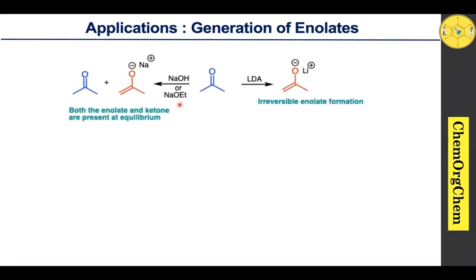Next we move on to the generation of enolates by LDA — one of the most important applications. When acetone is treated with common bases like sodium hydroxide or sodium ethoxide, they only partially generate the corresponding enolate ion. This enolate is present at equilibrium with acetone, which may lead to side products since the enolate acts as a nucleophile and acetone acts as an electrophile. When the same ketone is treated with LDA, it is completely converted into the enolate form — meaning this reaction involves irreversible enolate formation.